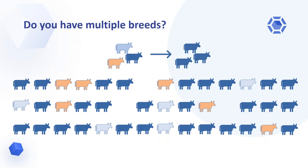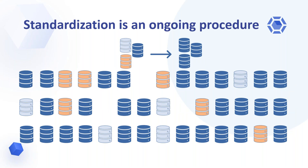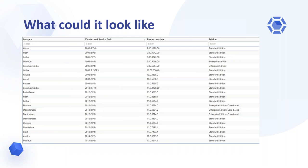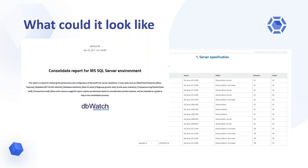There is a reason why farmers focus on one breed — the breeds are different and need different food, produce different milk, and some are best suited for steak. Multiple breeds makes it difficult to streamline the farm. Like the farmer who focuses on one breed, a DBA must try to standardize versions, patch levels, and platforms as much as possible. You need an overview of your versions and patch levels, and employ consolidation as an ongoing procedure to make your farm always right-sized. When you have an overview of what is running on what versions, you can use it to plan for a better structure and combine it with reporting to let management know you're doing a great job.